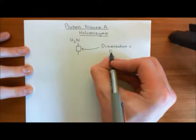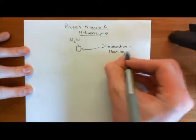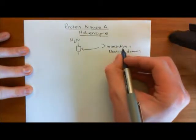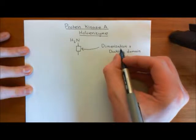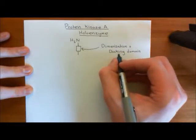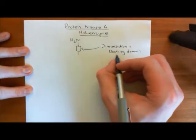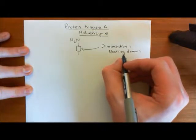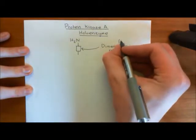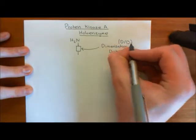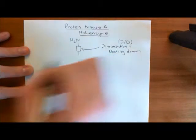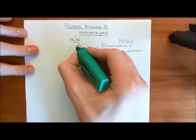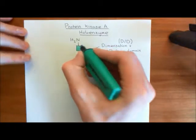The logic behind this name — dimerization and docking domain — will become apparent very soon. It's going to be involved in dimerizing two regulatory subunits together, and it's also going to be involved in the docking of protein kinase A holoenzymes to other proteins known as A kinase anchoring proteins. The dimerization and docking domain is often abbreviated to the D/D domain — D for dimerization and D for docking. Let's color in the dimerization and docking domain of this regulatory subunit in turquoise.